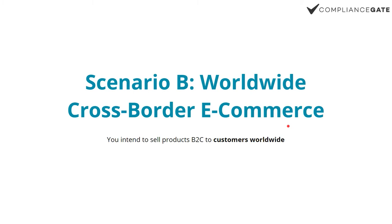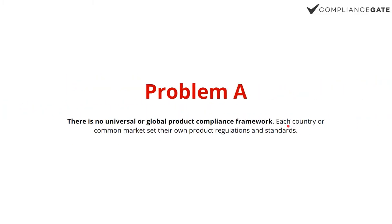Scenario B. This is when it gets a lot more complicated: selling worldwide — worldwide cross-border e-commerce to be specific. That could be a fulfillment center or a crowdfunding campaign. Now you're facing two issues. Problem A is that there is no universal or global or United Nations product compliance framework. It's not like trademarking, for example, with the Madrid Protocol that applies in 150 countries or so — that doesn't exist for compliance. What this means is that each country, or common market in the case of the European Union, is free to set their own product regulations and standards. So there's no global framework.